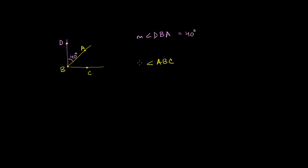And let's say that we know that the measure of angle ABC is equal to 50 degrees. So there's a bunch of interesting things happening here. The first interesting thing is that both of these angles share a side. If you view these as rays, they both share ray BA. And when you have two angles like this that share the same side, these are called adjacent angles, because the word adjacent literally means next to.